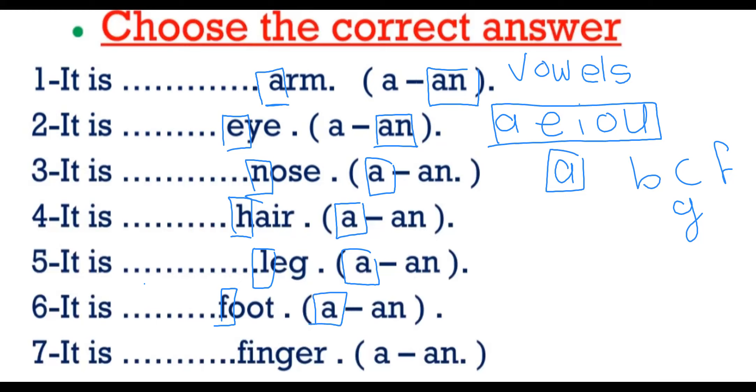It's finger. Finger is F. So we use A because it's not a vowel. Thank you.